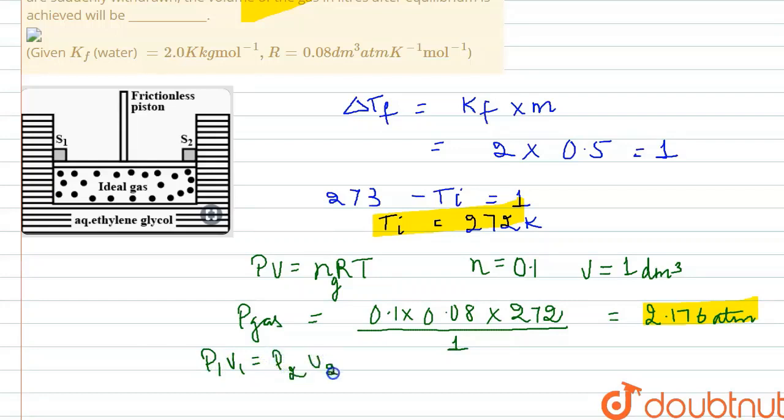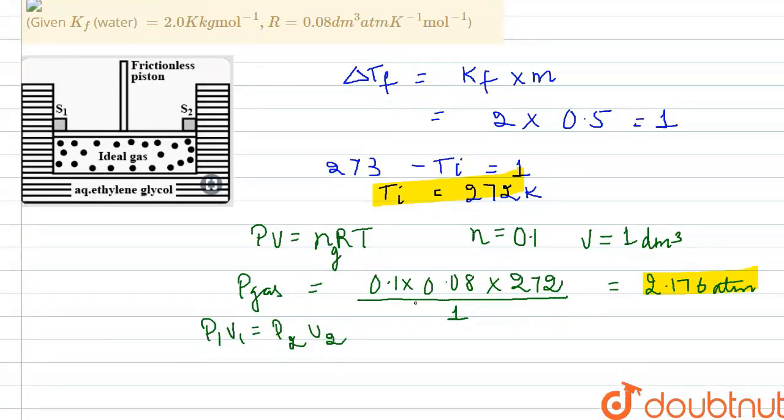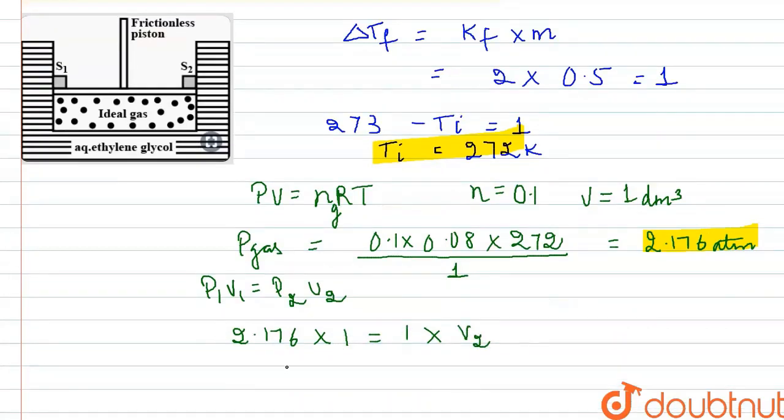Now this is the pressure of the gas. As I said, we have to use PV is equal to constant, so P1V1 equals to P2V2. What is the pressure which is given to us here? 2.176. What is the volume? 1. P2 is 1 also, and V2 is what we need to find out.